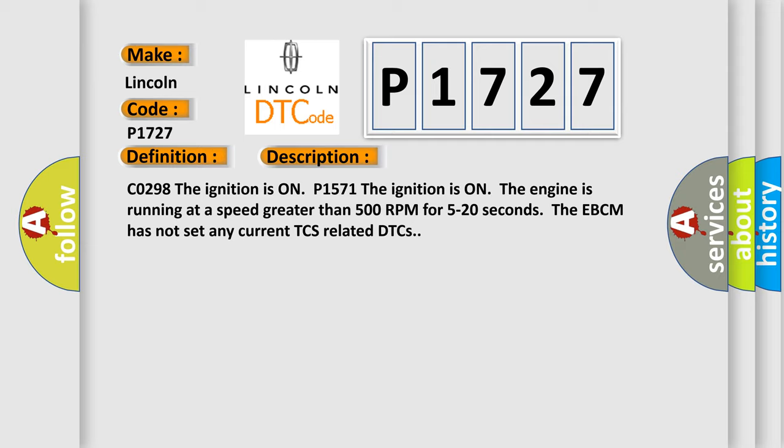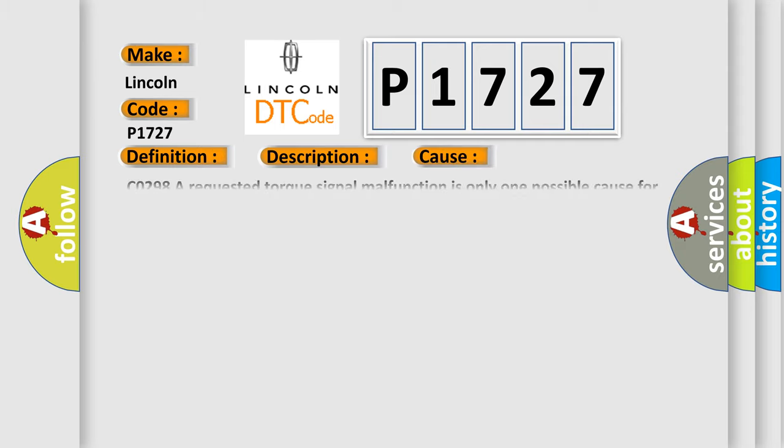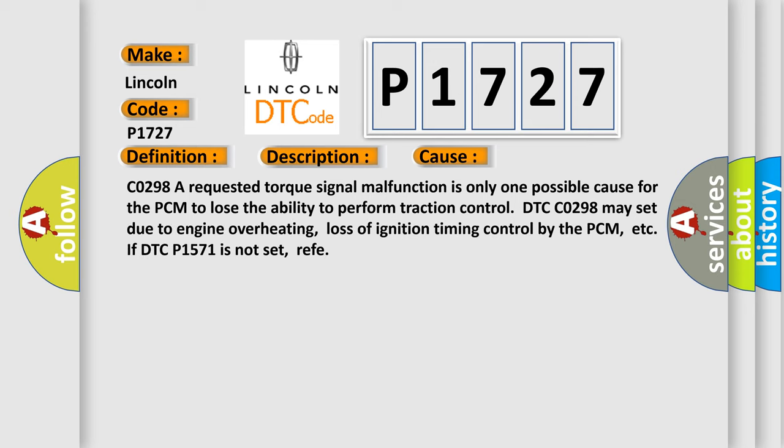This diagnostic error occurs most often in these cases. CO298 A requested torque signal malfunction is only one possible cause for the PCM to lose the ability to perform traction control. DTC CO298 may set due to engine overheating, loss of ignition timing control by the PCM. If DTC P1571 is not set, refer.